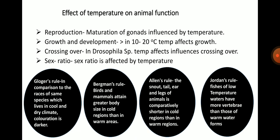Regarding the effect of temperature on morphology, three rules are discussed. According to Bergman's rule, temperature affects the absolute size of an animal and relative proportions of body parts — birds and mammals attain greater body size in cold regions than in warm areas. According to Alan's rule, the tail, snout, ears and legs of mammals are relatively shorter in colder parts than in warmer areas. According to Jordan's rule, fishes of low temperature waters have more vertebrae than those of warm water forms.